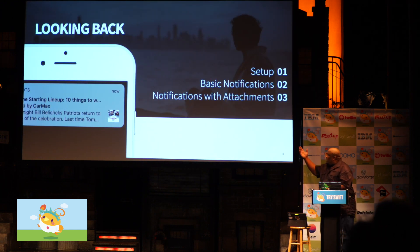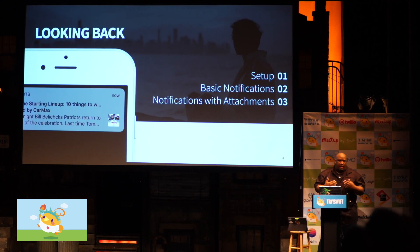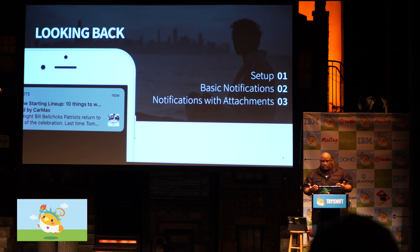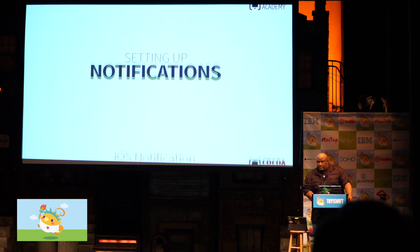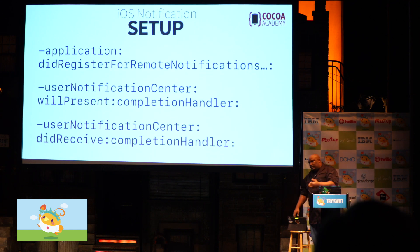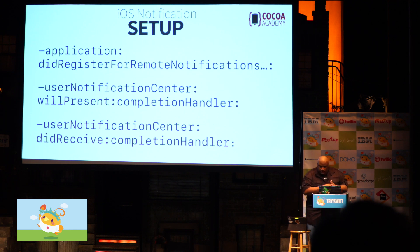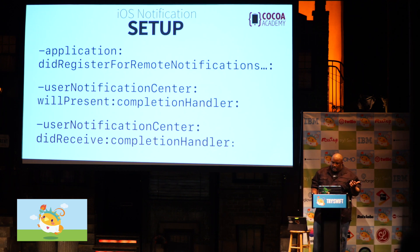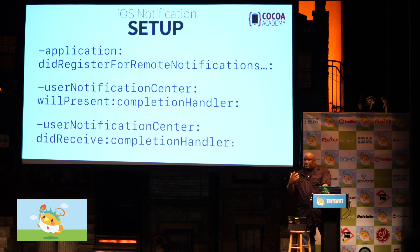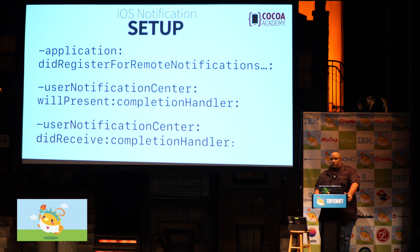Looking back, we're going to cover setup. We're going to cover basic notifications that everybody with an iPhone in this room knows about. And we're also going to look at what notifications with attachments look like. Setting up notifications, we have three basic methods. Did register is what we check on the device to see if we've gotten permissions. If we haven't, we ask the user. If we have permissions, we access the device token. Will present is called when the app is in the foreground. And did receive is called when the notification is delivered to the user. Those are the three basic methods you need to get started in iOS 10 and 11.